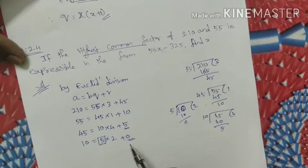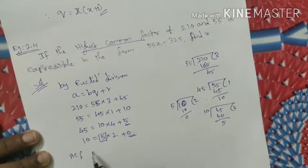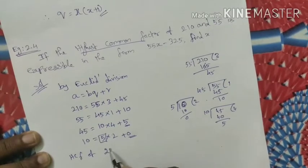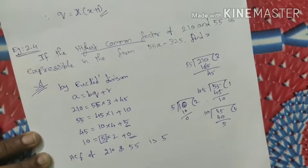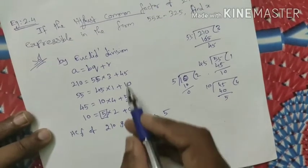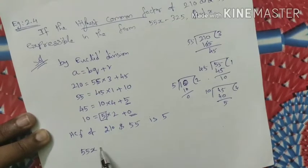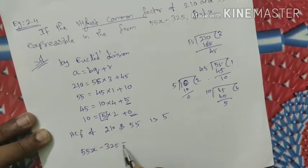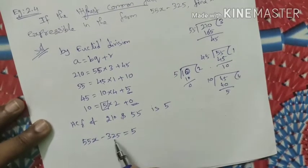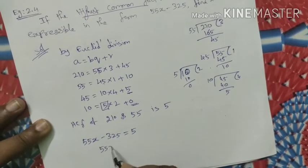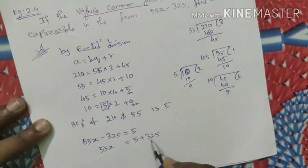Now we apply this to find x. The HCF of 210 and 55 is 5. We are given that the HCF is expressible as 55x minus 325, so 55x minus 325 is equal to 5. Therefore, 55x is equal to 5 plus 325.